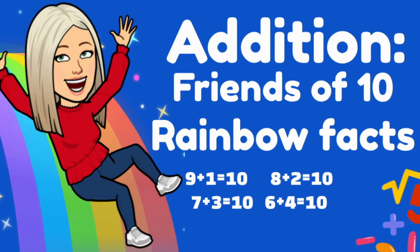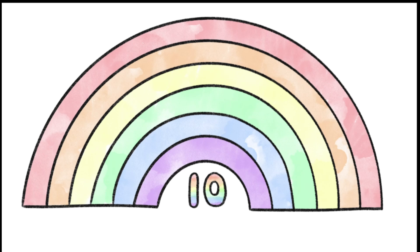Simple addition using friends of 10 or rainbow facts. Two numbers that add together to make 10 are called rainbow facts. We can also call them friends of 10 because they always go hand in hand to make 10.